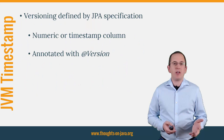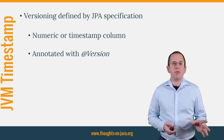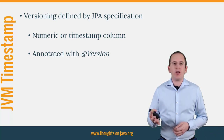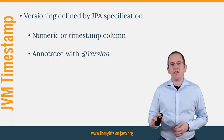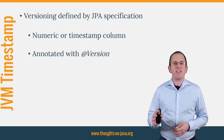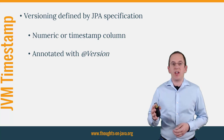The JPA specification supports numeric and timestamp columns for versioning. You can use the timestamp column in the same way as a numeric version column. You just need an entity attribute of type java.util.Date and annotate it with a @Version annotation. Let's take a quick look at an example before we talk about the problems that this approach might introduce.